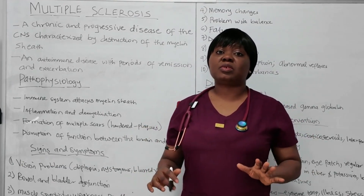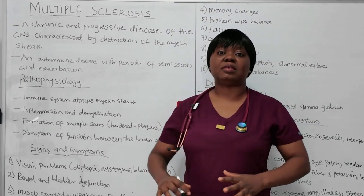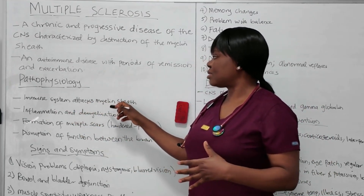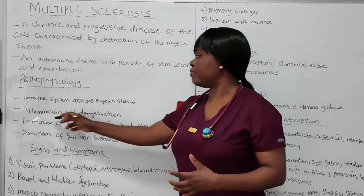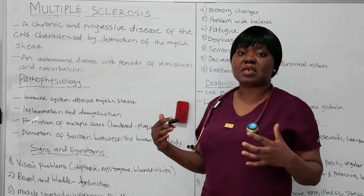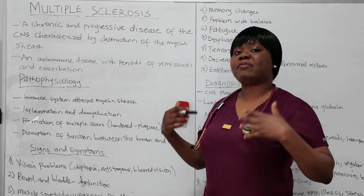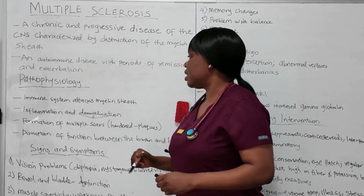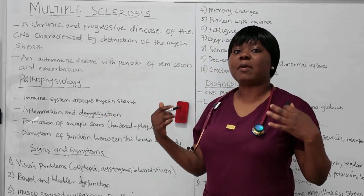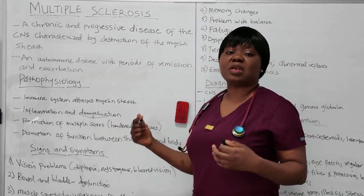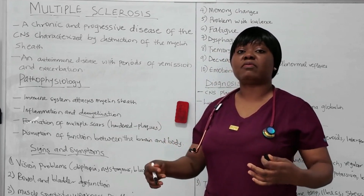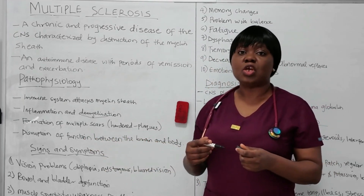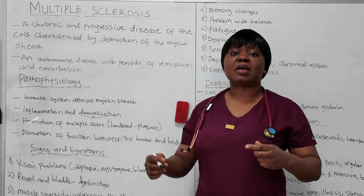The pathophysiology of multiple sclerosis: as an autoimmune disease, the immune system attacks the myelin sheath, leading to inflammation and demyelination. As inflammation occurs, it destroys the myelin sheath — that's what we call demyelination. Because of this, it leads to formation of multiple plaques or multiple scars, which is where the name multiple sclerosis comes from. Sclerosis refers to the formation of hardened scar tissue, disrupting the function between the brain and the body, so there is no proper transmission of impulses from the brain and spinal cord to the rest of the body.